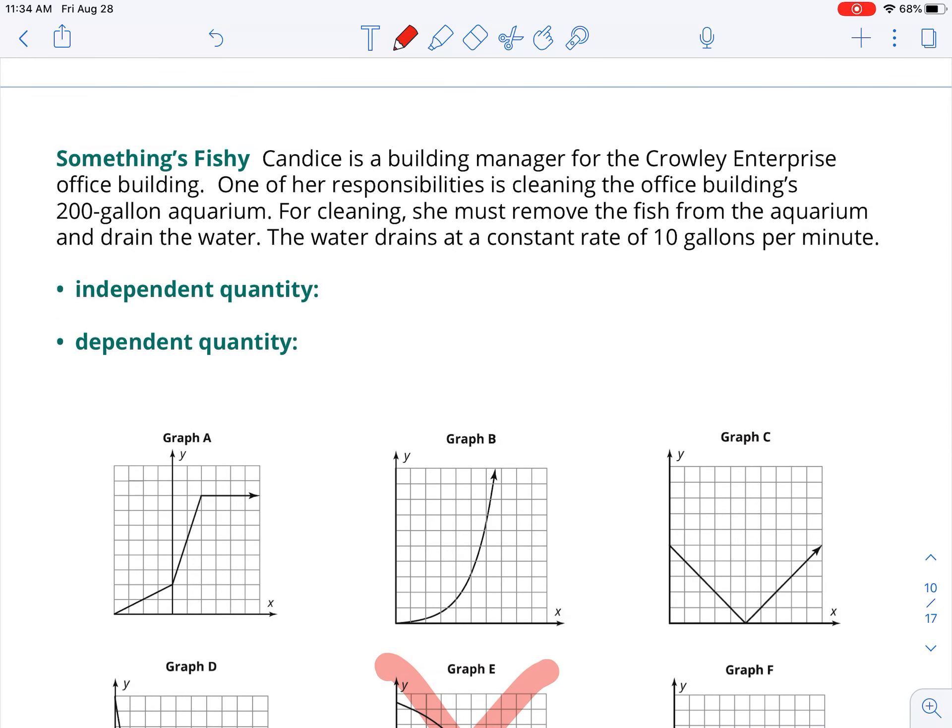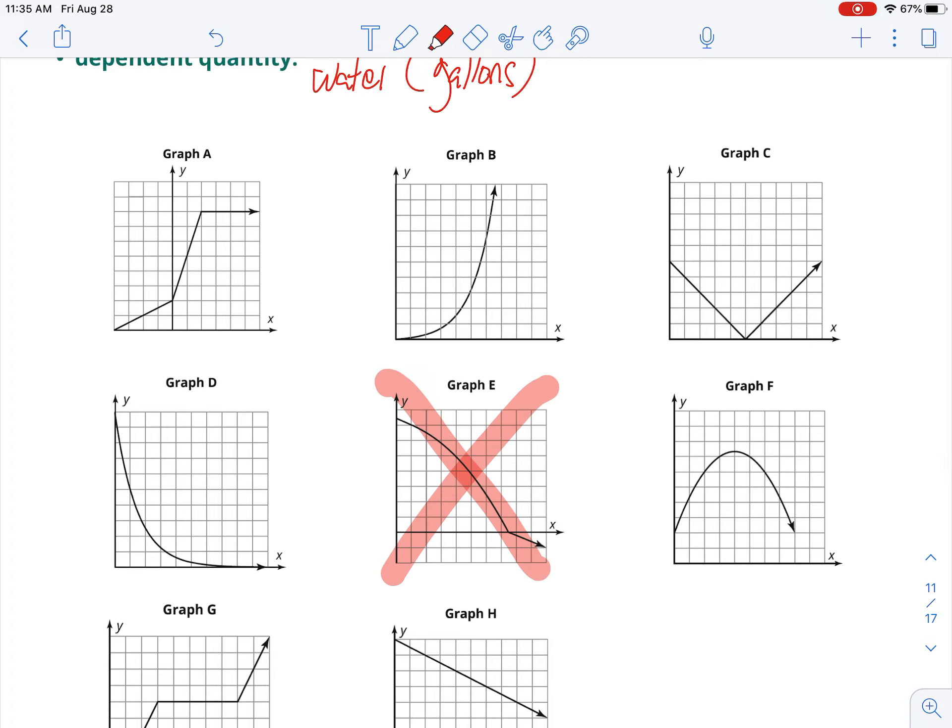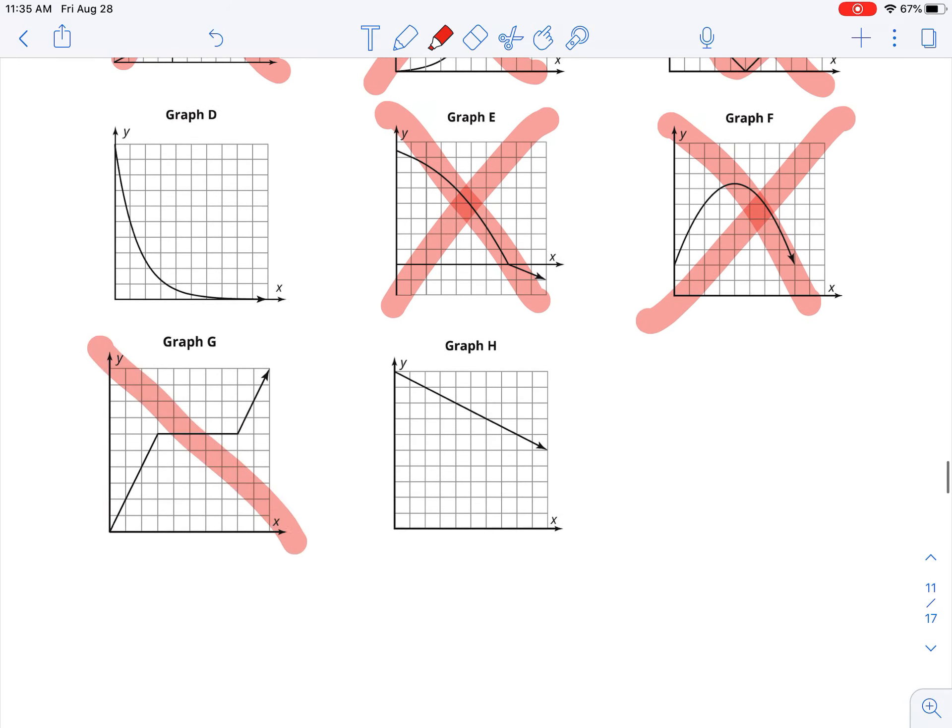So I've got time. Time is almost always my independence, and that's minutes. What else is going on here? You're draining a big old aquarium. You've got water that's draining, and that unit is in gallons. So to try to figure out what's happening here, you're draining a tank. You start off with 200 gallons, and you start draining it out. So you're draining. You're decreasing. Anything that is increasing here is not going to happen. Now this one is, yes, decreasing, but it increases. We didn't talk about filling up the tank yet. That one's increasing. This one's increasing. So that leaves me with D or H.